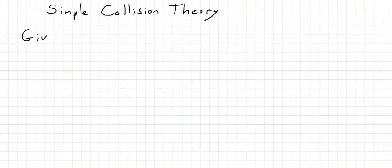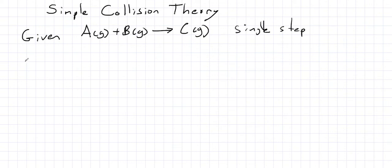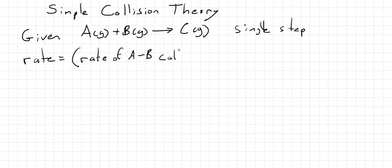Suppose we're given a reaction A gas plus B gas. We would suppose that the rate would be equal to the rate of AB collisions. Now we know the rate is given as the number of collisions — just the raw number of collisions per second.